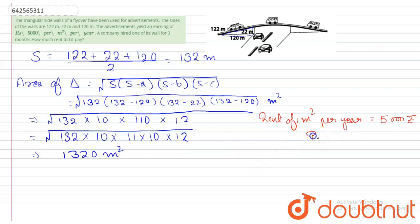And if you want to find out per month, this will be like 5000 divided by 12, right?